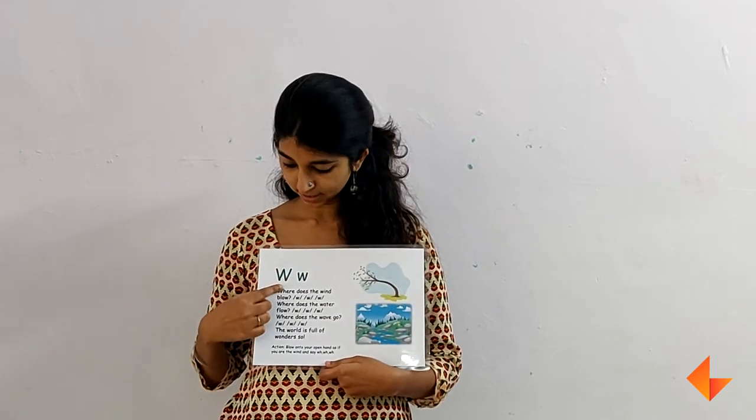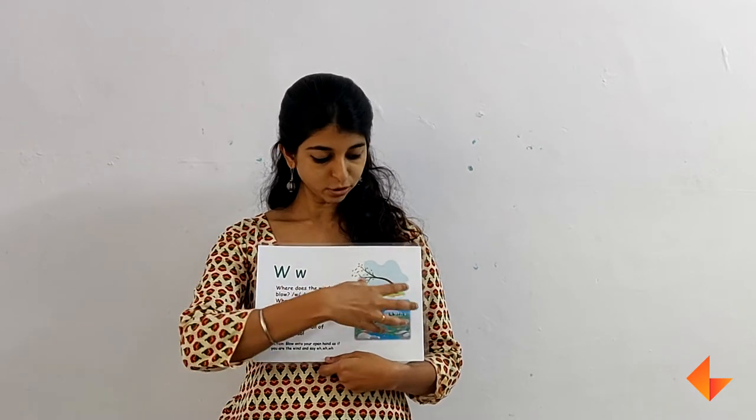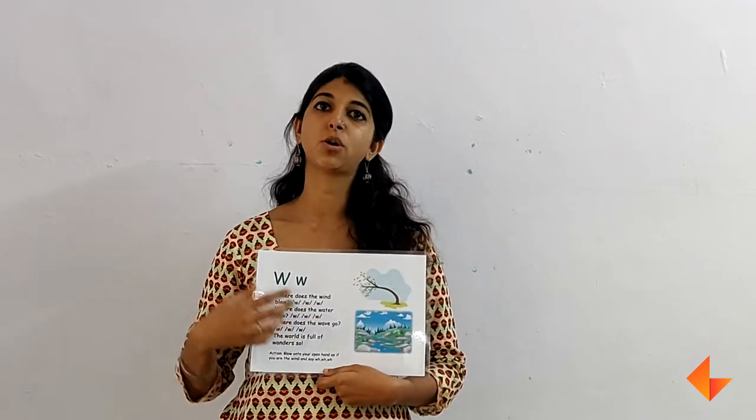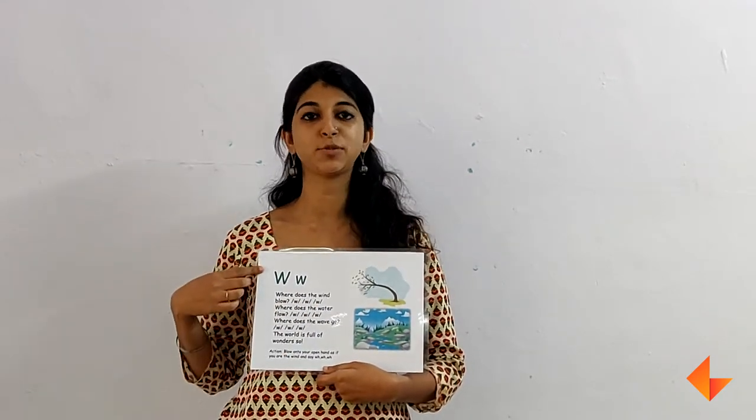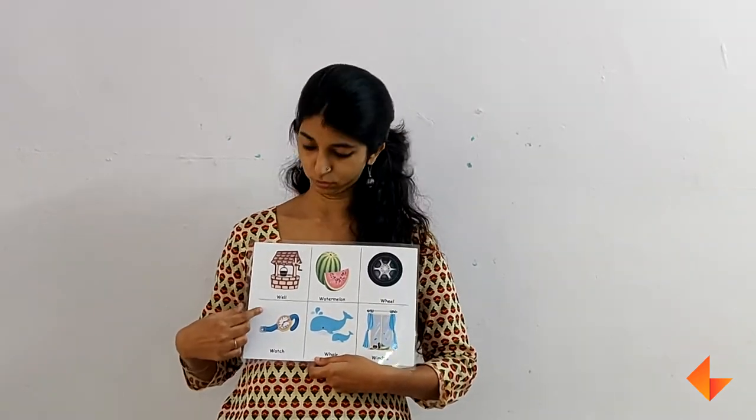This is capital W and this is small w. Once you have spoken about the picture, sung the song, and helped children identify the alphabet, you can move on to the vocabulary words. Repeat each vocabulary word by stressing on the first sound.